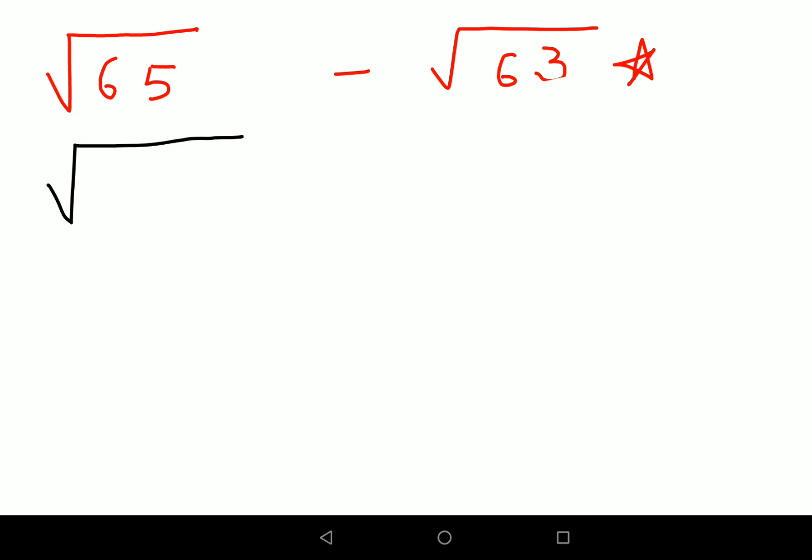We will start with the method of taking the square root of imperfect squares. First, you need to write the number closest to a perfect square.